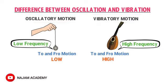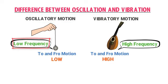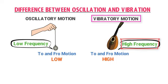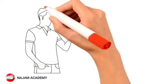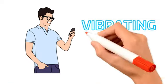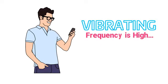From this example, we learn that if the frequency of to and fro motion of an object is low, it is oscillatory motion — for example, the to and fro motion of a pendulum. If the frequency is high, it is vibratory motion — for example, the to and fro motion of a guitar string. Therefore, you always say your cell phone is vibrating, not oscillating, because the frequency of its to and fro motion is high.